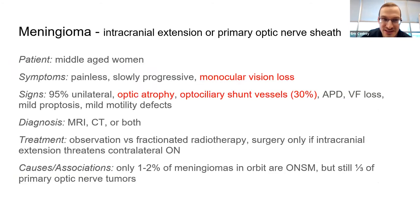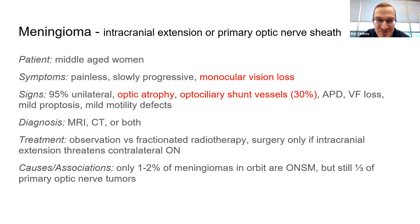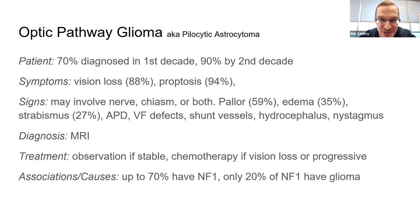Meningiomas and gliomas — at least one question typically. The big tip-off for meningioma is age: typically middle-aged women. The triad is optic atrophy and optociliary shunt vessels — if you see those vessels, you need to image them because the patient may have an optic nerve sheath meningioma. Gliomas are typically younger patients, 90% by the second decade, and proptosis is quite common.